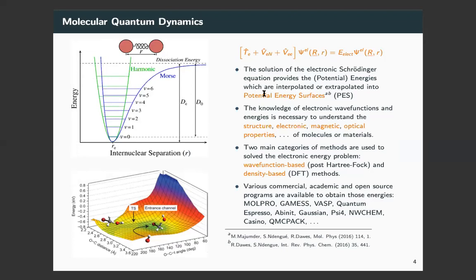What do you learn from the solution of the electronic Schrödinger equation? You can learn about the structure of the molecule, the electronic, magnetic, optical properties of the molecule or material. Usually there are two big types of methods used. There are wave function-based methods that are mainly post-Hartree-Fock methods, and methods based on density functional theory. Wave function-based methods are more accurate but scale poorly with the size of the system. Density-based methods are usually slightly less accurate and not always reliable for specific processes, but scale much better with the size of the system. Many codes are available, some commercial, some academic: MOLPRO, Quantum Espresso, Gaussian, among others.